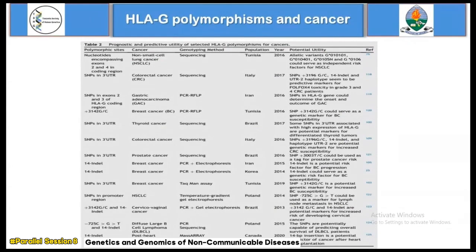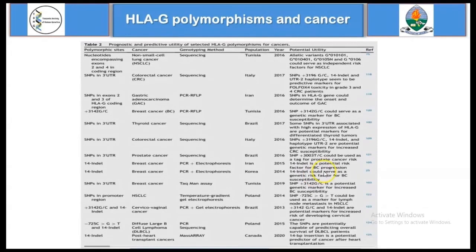Given the influence of polymorphisms in the HLA-G gene on its expression, a number of studies have been conducted to explore whether some polymorphic variants are associated with cancer susceptibility, or whether they can be used as prognostic or predictive markers in cancer. As shown in the table, some of these polymorphic variants carry potential to serve as genetic markers for cancer susceptibility, and others as predictive or prognostic markers, though there are some conflicting findings that do not find any association with clinical utility.